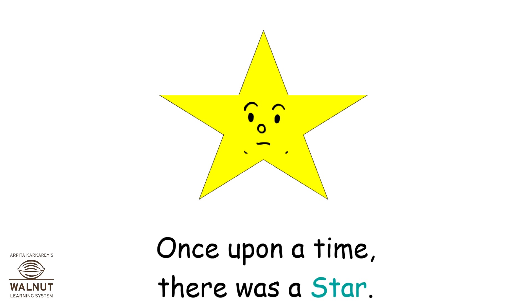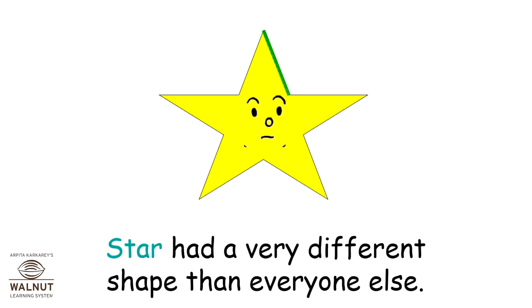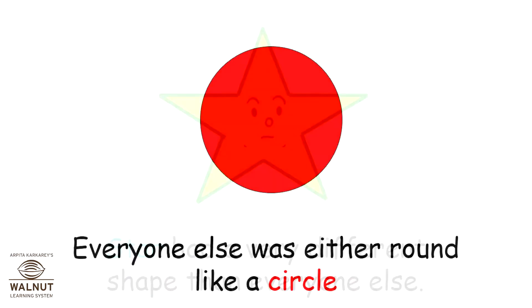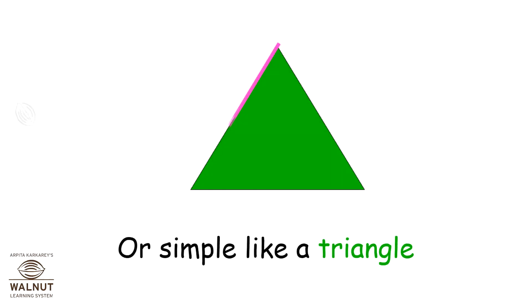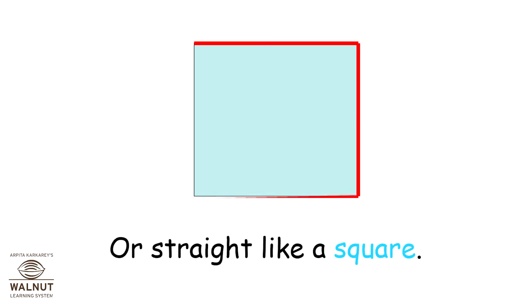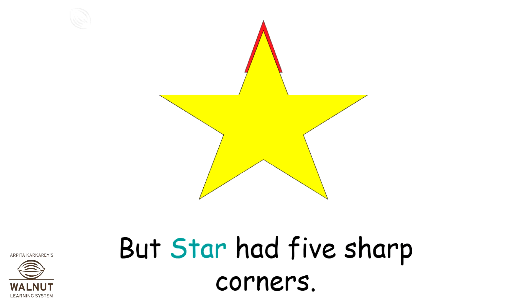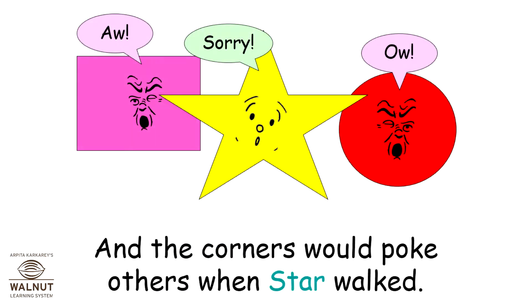Once upon a time, there was a star. Star had a very different shape than everyone else. Everyone else was either round like a circle, or simple like a triangle, or straight like a square. But star had five sharp corners, and the corners would poke others when star walked.